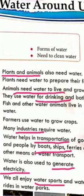Farmers also need water to grow crops. Crops are what we use in our daily life to eat, like wheat and maize. We always use these crops in our daily life and farmers need water to grow them. Many industries also require water. Water also helps in transportation of goods and people by boats, ships, ferries, and other means of water transport.